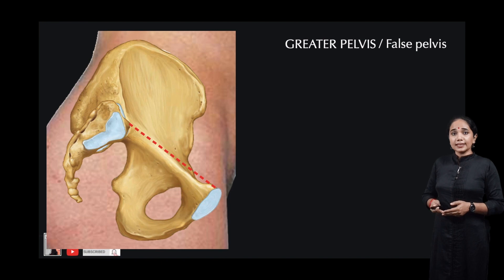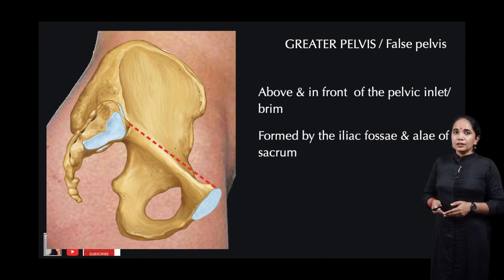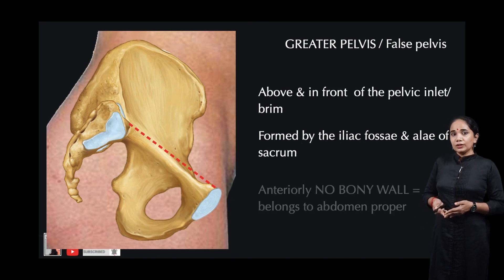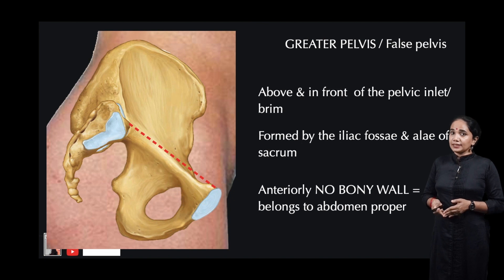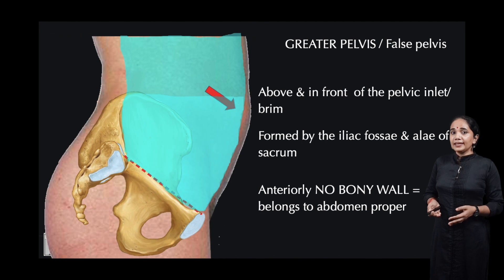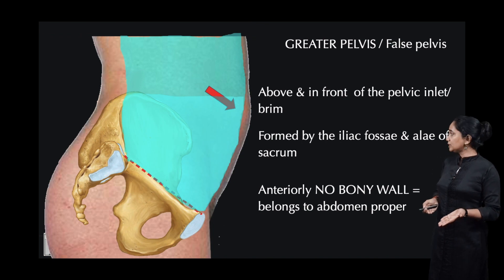Let us look at the greater pelvis, also called the false pelvis. The greater pelvis is seen above and in front of the pelvic inlet, and it is formed by both the iliac fossae and the ala of the sacrum. Anteriorly it has no bony wall — it becomes part of the abdominal cavity. Here you can see the anterior wall, which is the limit of the false pelvis or the greater pelvis: there is no anterior bony boundary to the greater pelvis.